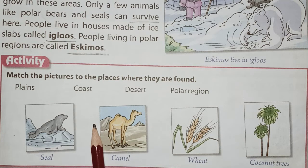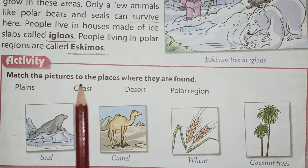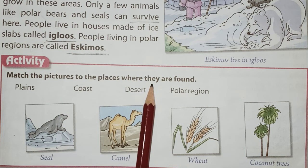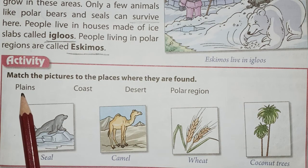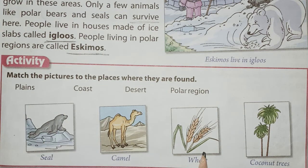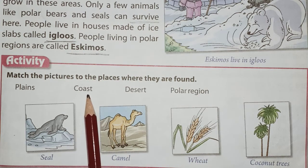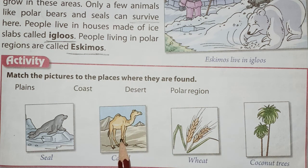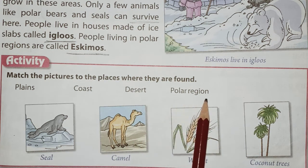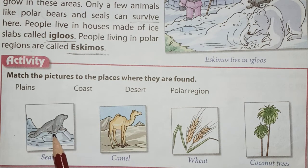Let's solve these activities — match the pictures to the places where they are found. The first one is plains, where we can grow wheat. Coast — we can have many coconut trees near the coast. Desert — camel. And polar region — we have seal.